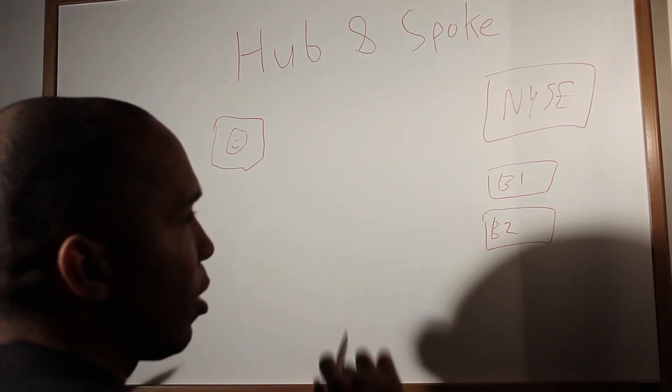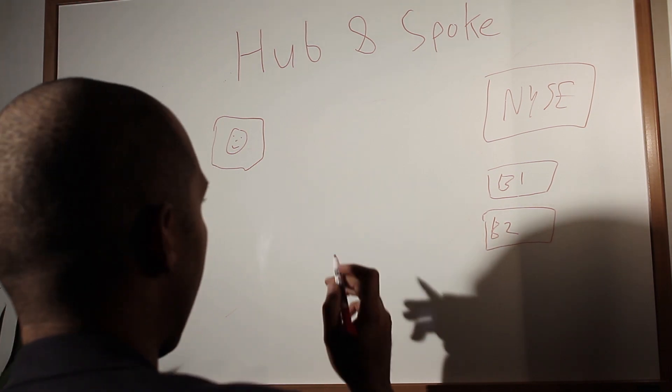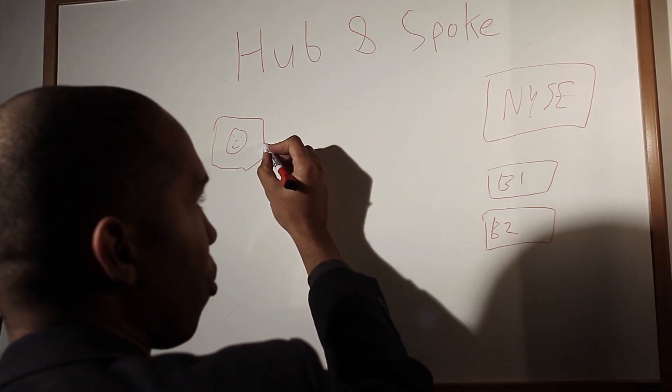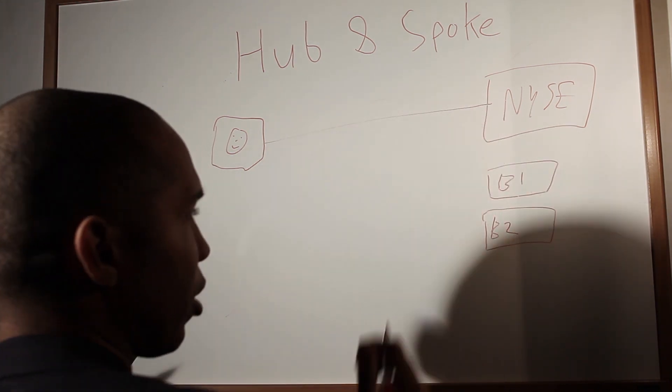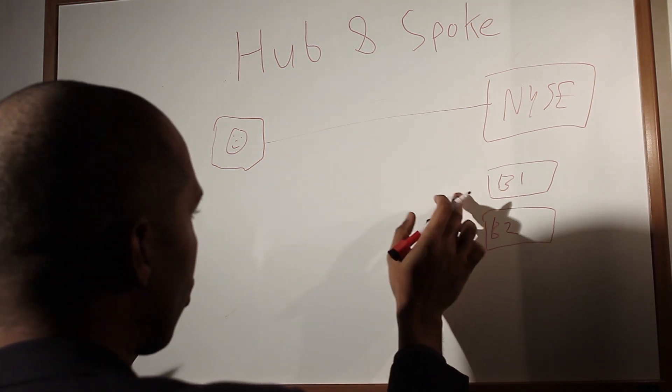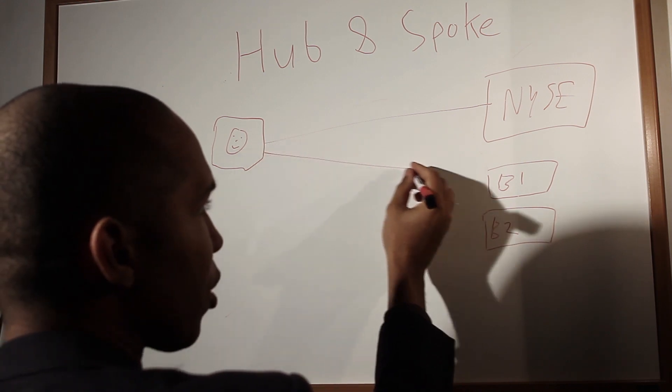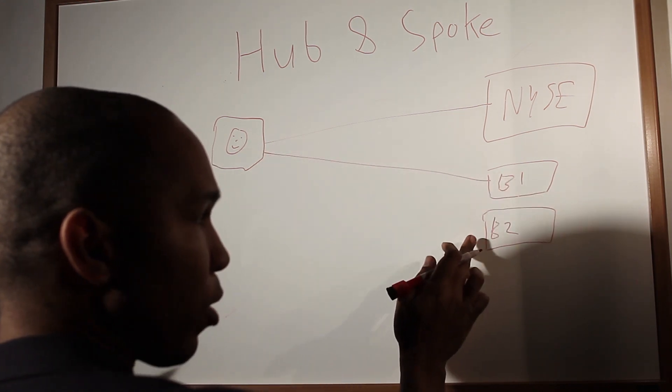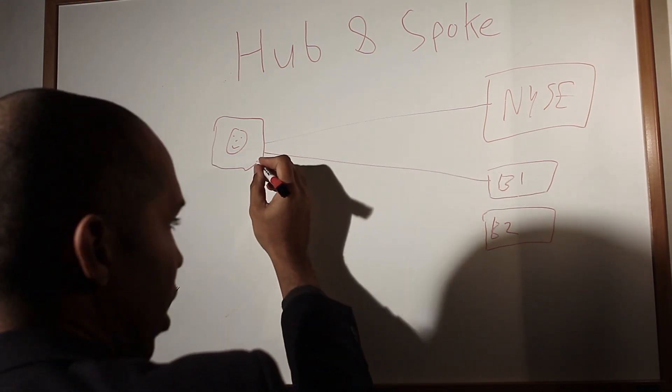So you might want to route to various brokers and things like that. So there is your situation. How are you going to make these connections? You can have direct connections or point-to-point connections to the exchange. But if you want to send an order to this broker, you're going to have to have another connection. You're going to want to send orders to this second broker, you're going to have to have a third connection.